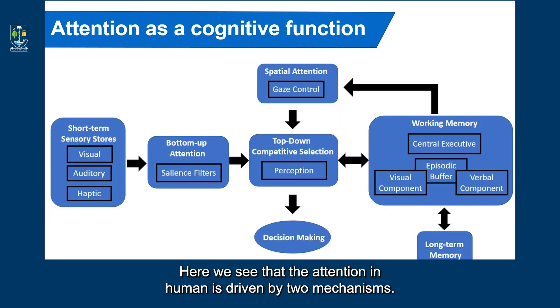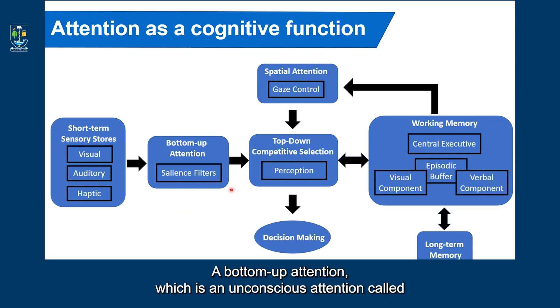Here we see that our attention in human is driven by two mechanisms. A bottom up attention, which is an unconscious attention called also saliency based attention and is driven by external stimuli. We saw that deep neural networks up to a point, they display this property by detecting saliency features. Remember, for example, convolutional neural networks.